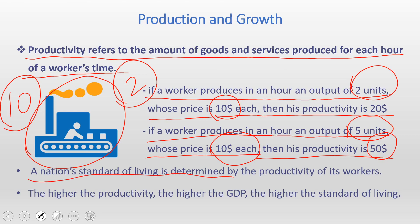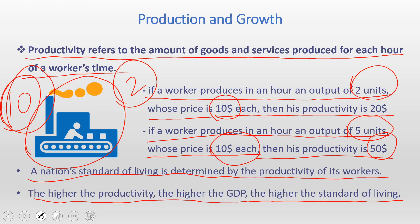A nation's standard of living is determined by the productivity of its workers. If labor productivity is high and workers are producing 10 goods and services per hour, they will produce more, export more, and the country will have more goods and services. When GDP increases, the nation's standard of living also increases. The higher the productivity, the higher the GDP, and the higher the standard of living — productivity drives GDP, which then improves the standard of living of the overall population.